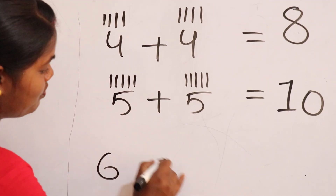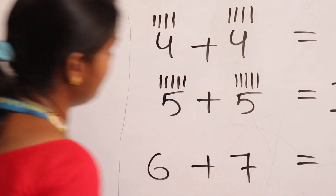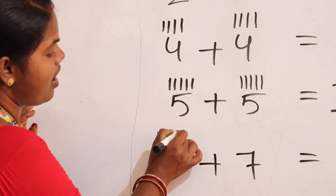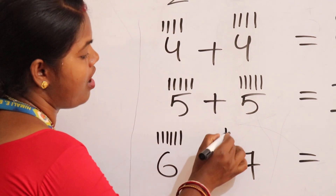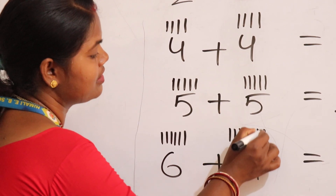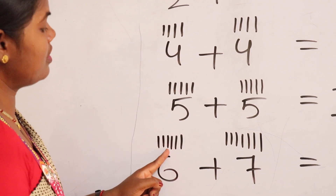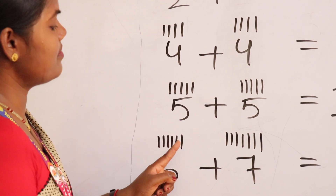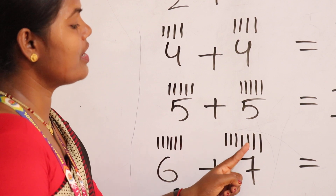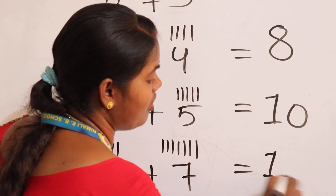6 plus 7. 1, 2, 3, 4, 5, 6. 1, 2, 3, 4, 5, 6, 7. Count all: 1, 2, 3, 4, 5, 6, 7, 8, 9, 10, 11, 12, 13. Answer is 40.